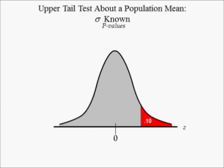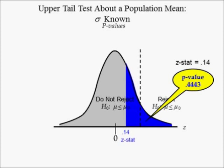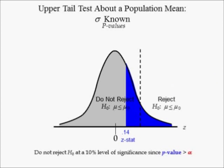Since this is an upper tail test with a significance equal to 0.1, the upper tail of the distribution is shaded in red and labeled 0.1. This tail defines the do not reject the null hypothesis and reject the null hypothesis regions. The blue tail probability is larger than the red tail probability because the Z-stat of 0.14 has a P-value equal to 0.4443, which is larger than 0.1. When the P-value, the blue area, is larger than alpha, the red area, which can't be seen here, we cannot reject the null hypothesis at a 10% level of significance. Notice that the Z-stat is in the do not reject the null hypothesis region.